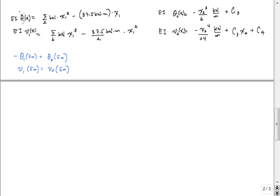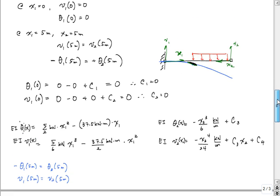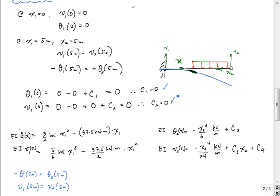All right, so we're back for part three in this beam deflection calculation using the double integration method. And so far we found using a couple other boundary conditions here that C1 and C2 were 0, using these two boundary conditions, that the displacement at 0 at the fixed support is 0 and the slope at the fixed support is 0.